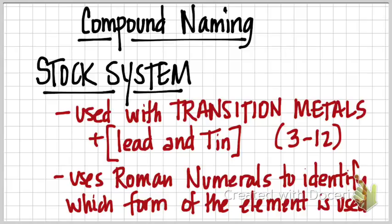When dealing with the stock system, you use Roman numerals to identify which form of the element is being used. These elements are called transition metals because they can have more than one type of charge.